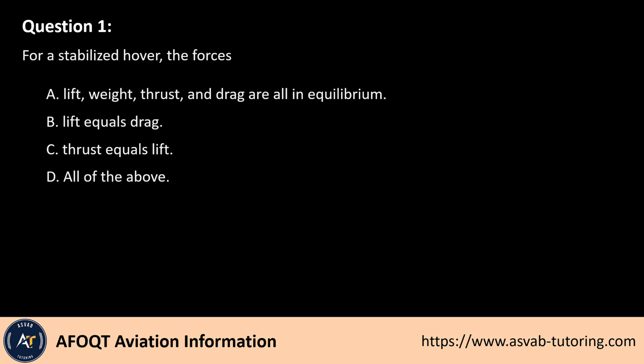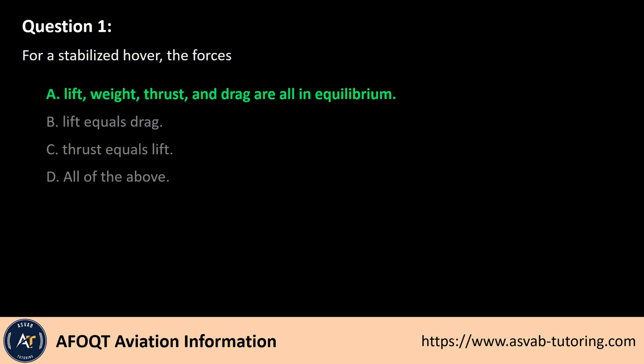The answer is A. In a stabilized hover, the forces acting on the helicopter must balance. Lift equals weight to maintain altitude, and thrust equals drag to prevent horizontal movement. This equilibrium ensures the helicopter remains stationary in the air. While options B and C describe partial equilibriums, only option A fully captures the balance of all four forces required for a stable hover.